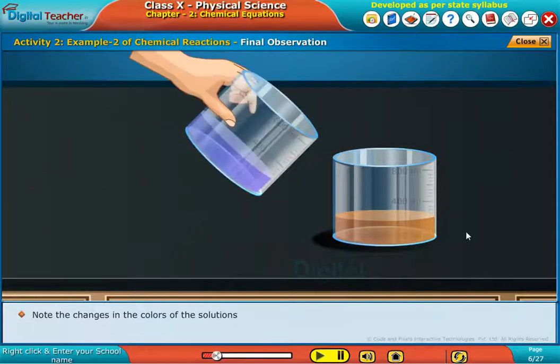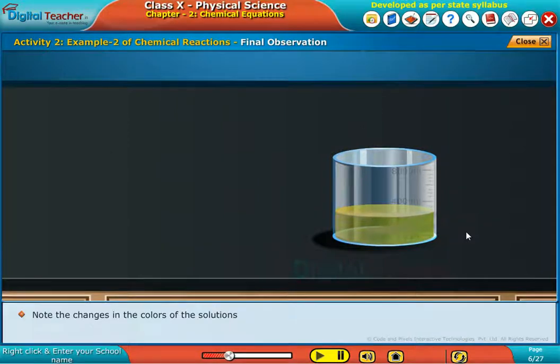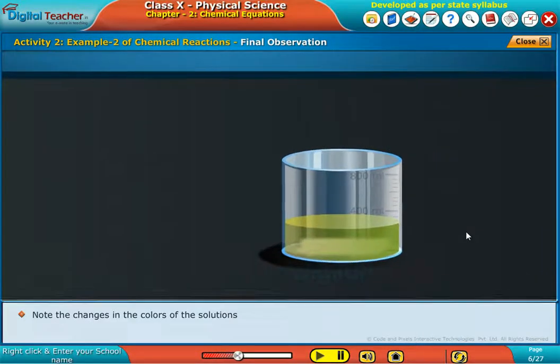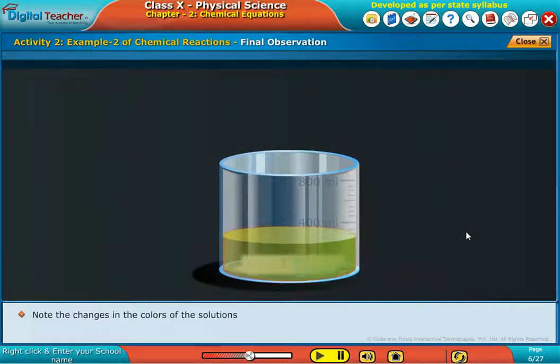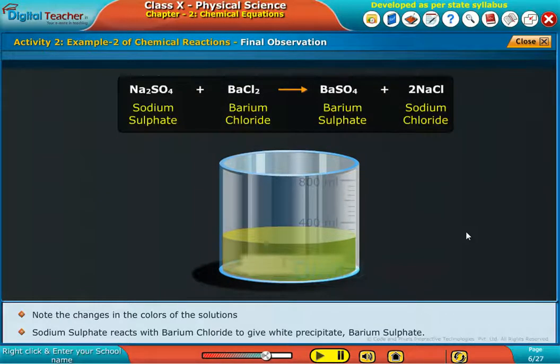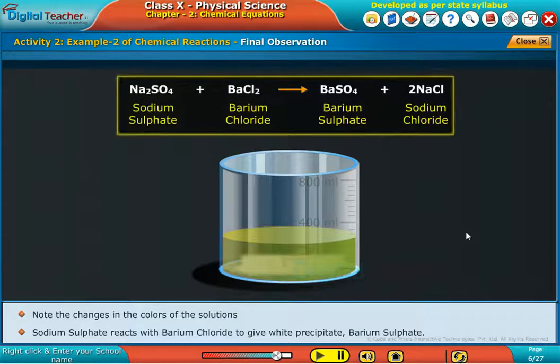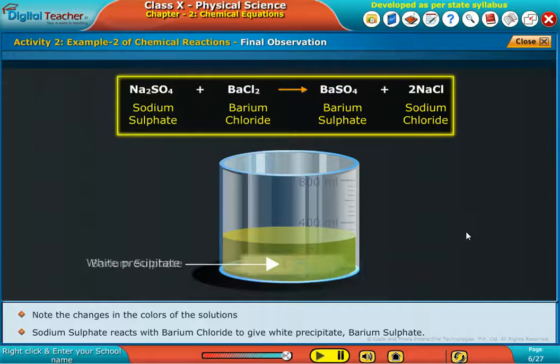Note the changes in the colours of the solution. Sodium sulphate reacts with barium chloride to give white precipitate barium sulphate.